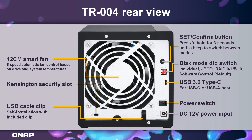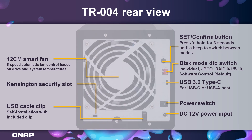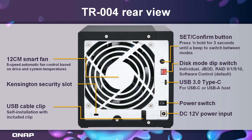On the other hand, the rear side is dominated by a 12 cm fan with automatic fan control, and all the necessary connections such as the Kensington security slot, the SCT confirm button, USB 3.0 Type-C port, power switch, a DC 12V power input, and most importantly for a disk RAID enclosure, we have the disk mode dip switch to change the RAID mode according to your needs or switch to software control.